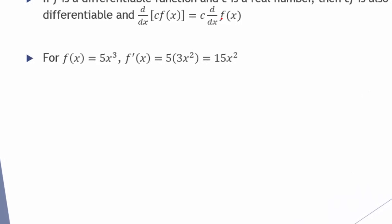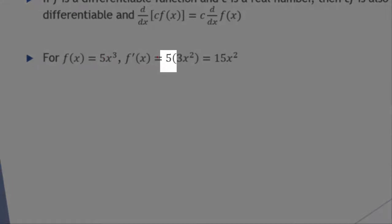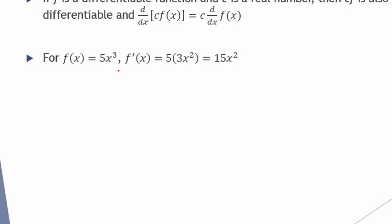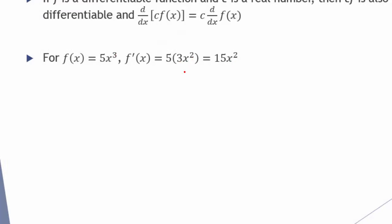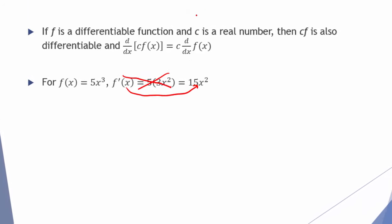So for example, if you wanted to take the derivative of f of x equals 5 times x cubed, you can leave the 5, the constant, out of the derivative and just take the derivative of x cubed. The derivative of x cubed is 3x squared. Then you would simplify by taking the 5 times the 3 and writing 15x squared. Once you get comfortable with these rules, feel free to skip this intermediate step and go straight to f prime of x equals 15x squared.